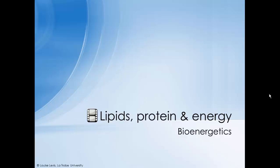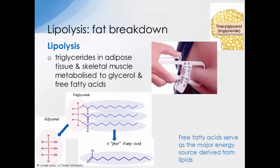This is the lipids, protein and energy clip. We've already looked at how glucose can be broken down both anaerobically and aerobically to produce ATP. This next series of slides looks at how fat and protein can also be used to provide ATP for the contracting muscle cell.